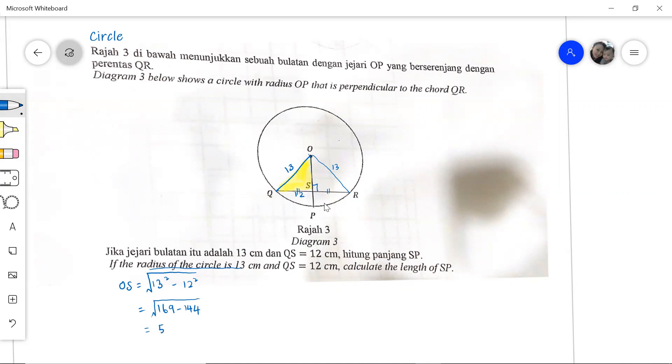So we have found OS to be 5. Once we have found OS to be 5, then we can find SP, isn't it? Which is this part. How do we find SP? SP will be taking the radius because it's part of the radius. So we take 13 minus the value of OS that we have just found, which is 5.